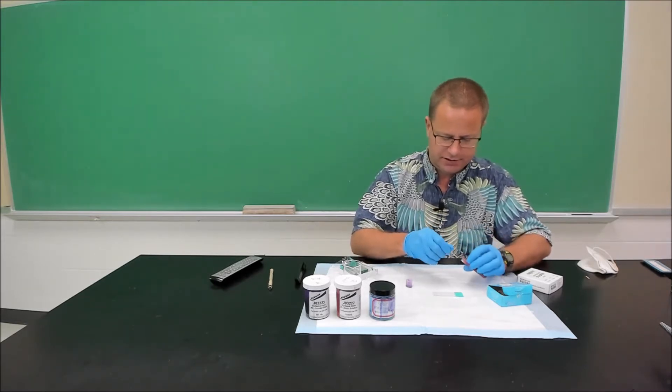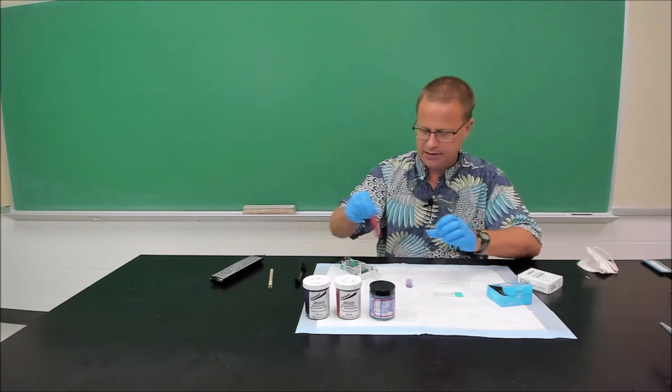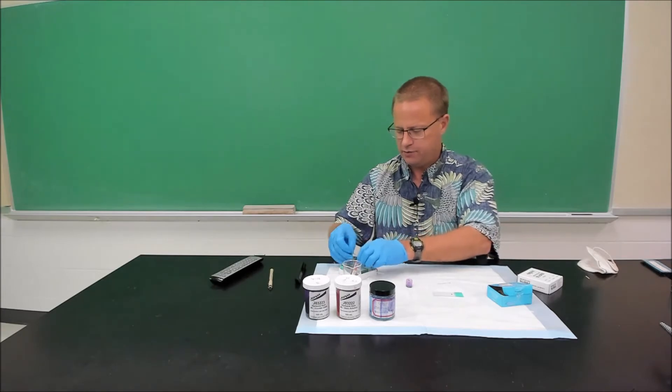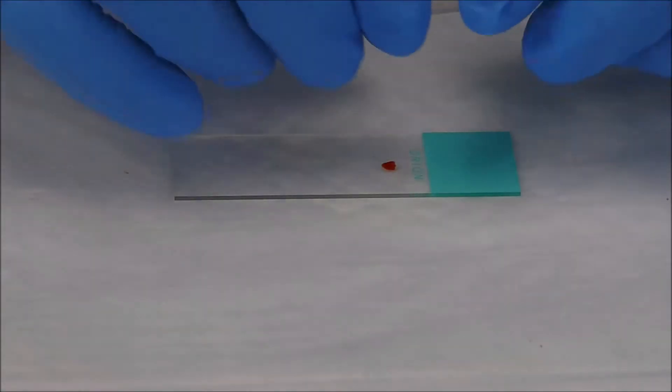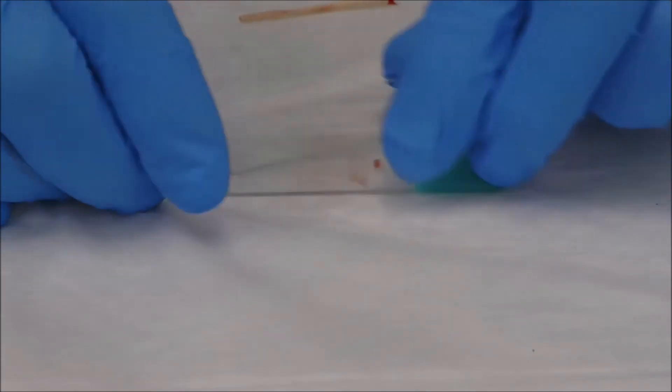And then we're going to put a big drop, not so big drop, on our slide. Then very quickly, we put our blood away. And then what we're going to do with the second slide, a spreader slide, is we're going to pull back over the sample until the blood runs up and down and then push very quickly that way. And that didn't work very well.